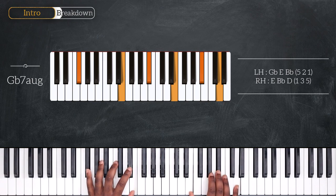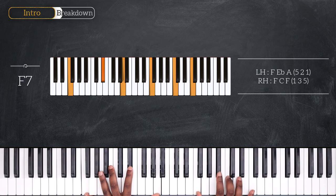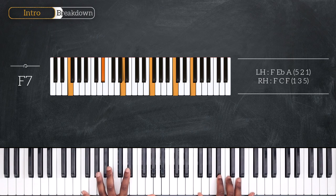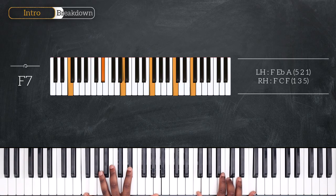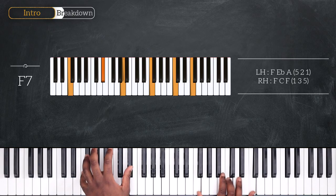Finally, to end the intro, we're playing F7 with F, Eb, and A, F, C, and F. As always, you can simplify that large voicing by only playing the root and the 7th, F and Eb.